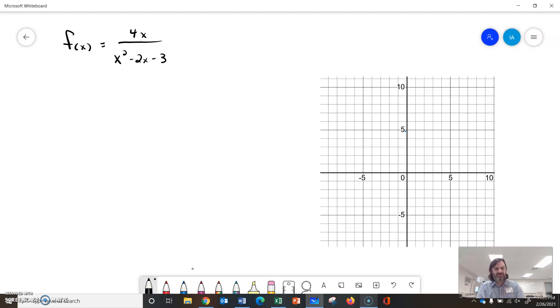We're going to graph a rational function by finding some characteristics. The function is 4x over x squared minus 2x minus 3.